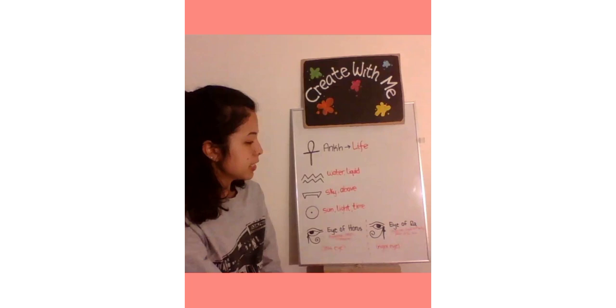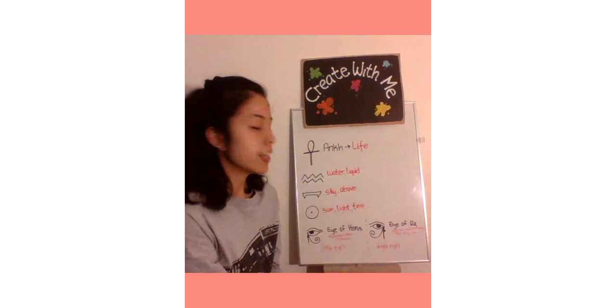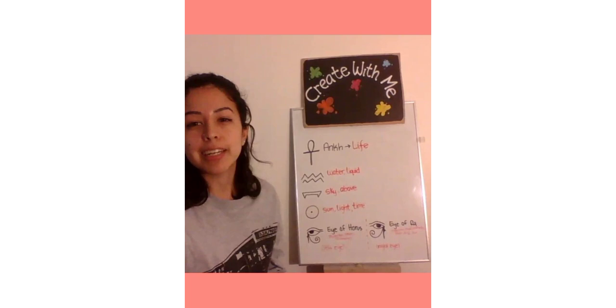This one, which is seen as the right eye, is the Eye of Ra. The Eye of Ra represents protection, royal authority, and the power of the sun.